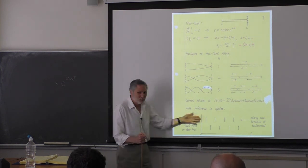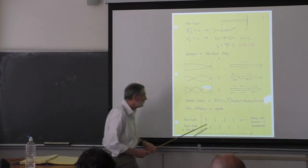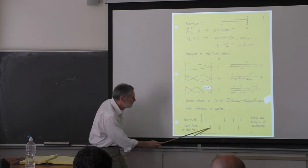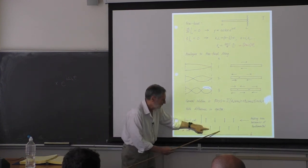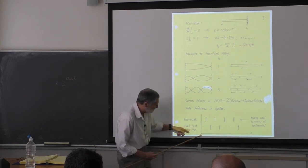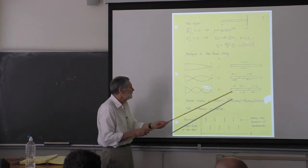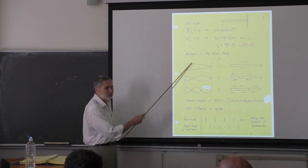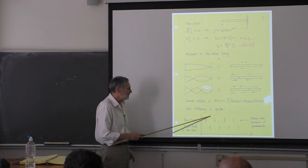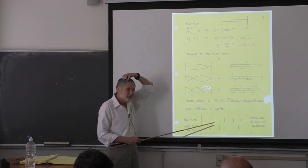When we take the same length bar with mixed boundary conditions, the fundamental drops by a factor of two because it's a quarter wavelength. The next mode is not at twice the frequency — it's at three times the fundamental frequency. The even harmonics are missing.